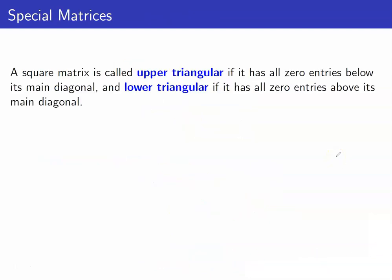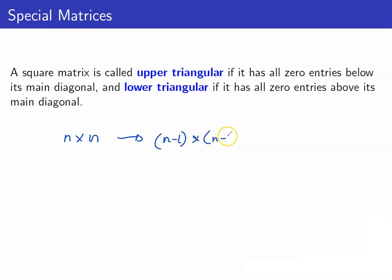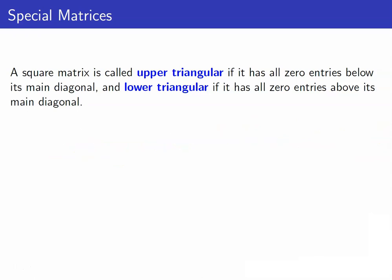Computing the determinant of an n by n matrix is quite tedious. Using cofactor expansion on an n by n matrix, you have to compute determinants of (n-1) by (n-1) matrices, and so on down to 2x2 or 3x3. This involves a lot of computation. However, for special matrices, the determinants will be very easy to compute.